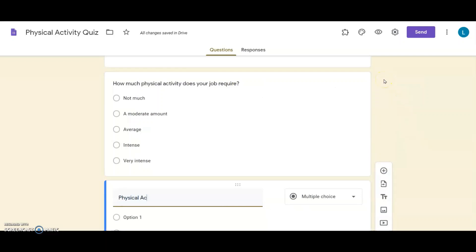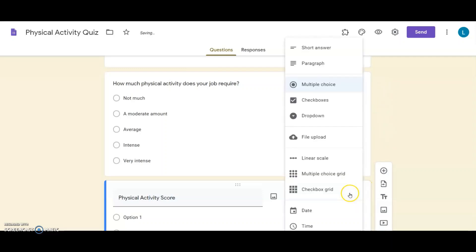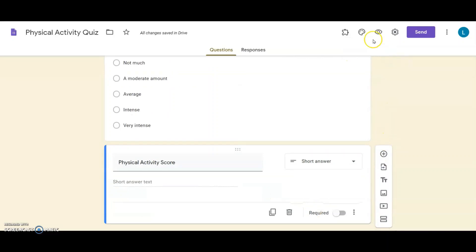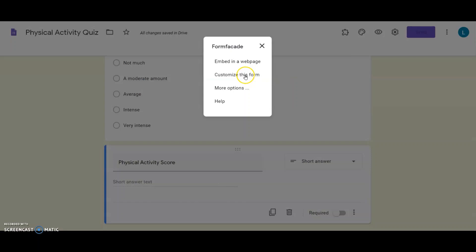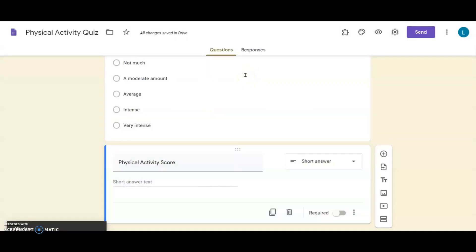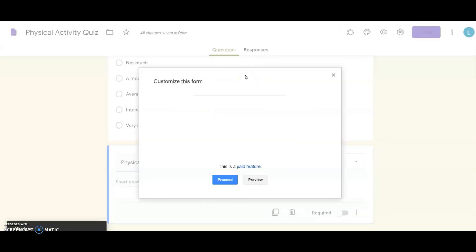At the end, add a short answer question in your Google Form for displaying the score, and then click on FormFaçade from the add-on menu. Click on Customize this form option, and then click on Proceed.